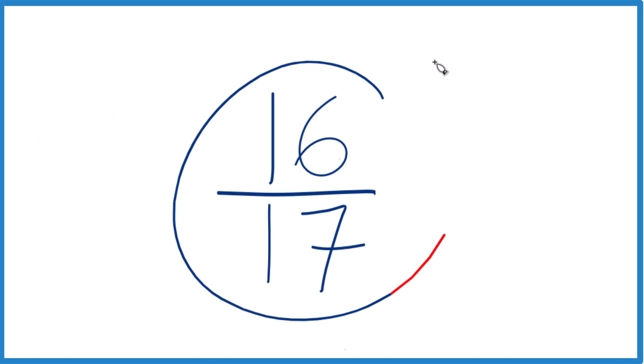Let's simplify the fraction 16/17. So we have 16 over 17. We want to reduce this down to lowest terms.